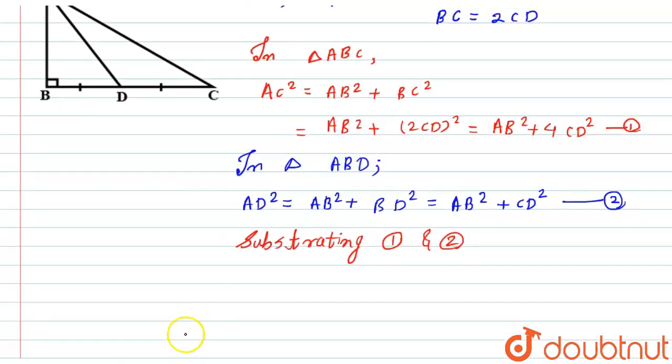What we will get? We will get AC² minus AD² equals AB² plus 4CD² minus in bracket AB² plus CD².